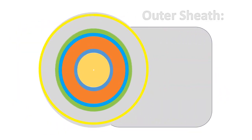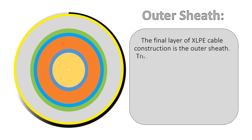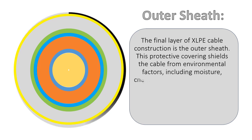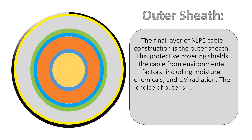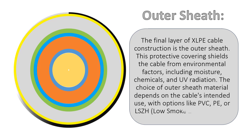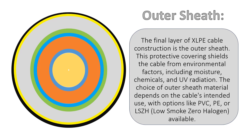Outer Sheath: The final layer of XLPE cable construction is the outer sheath. This protective covering shields the cable from environmental factors, including moisture, chemicals, and UV radiation. The choice of outer sheath material depends on the cable's intended use, with options like PVC, PE, or LSZH (low smoke zero halogen) available.